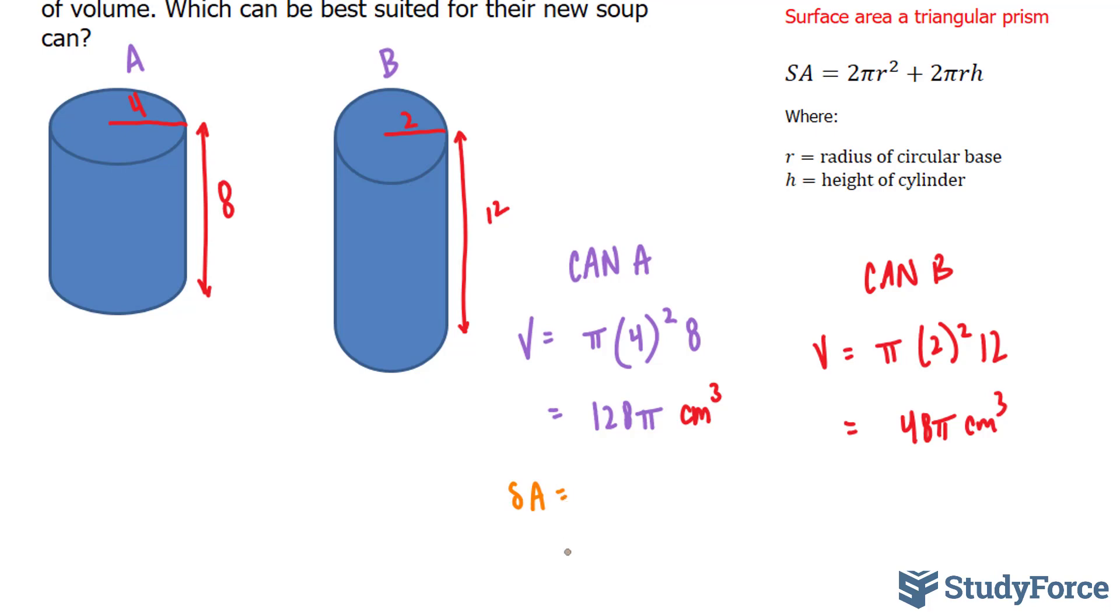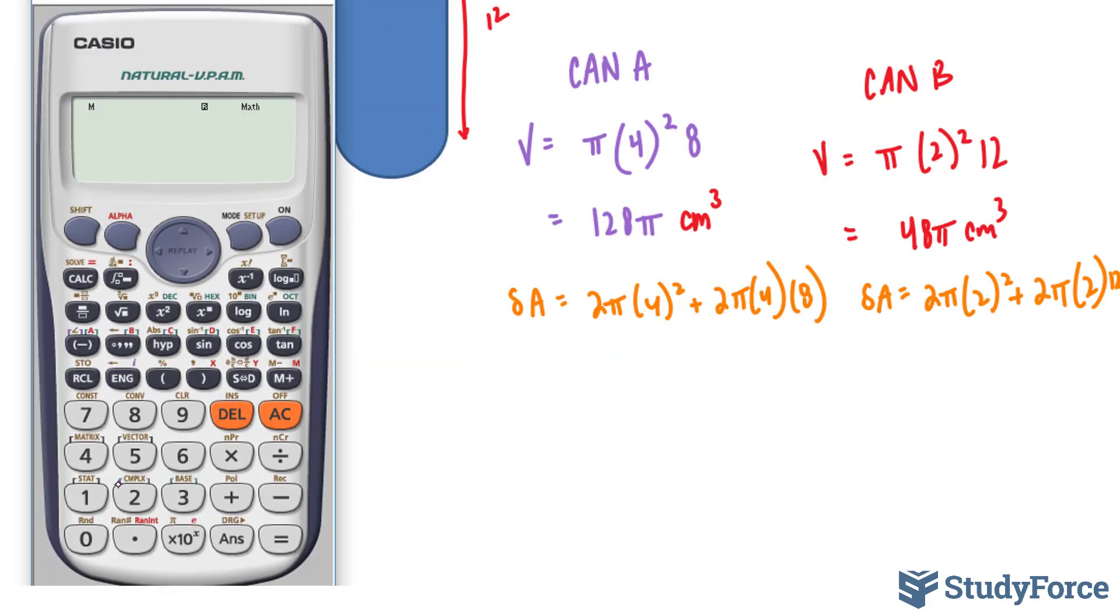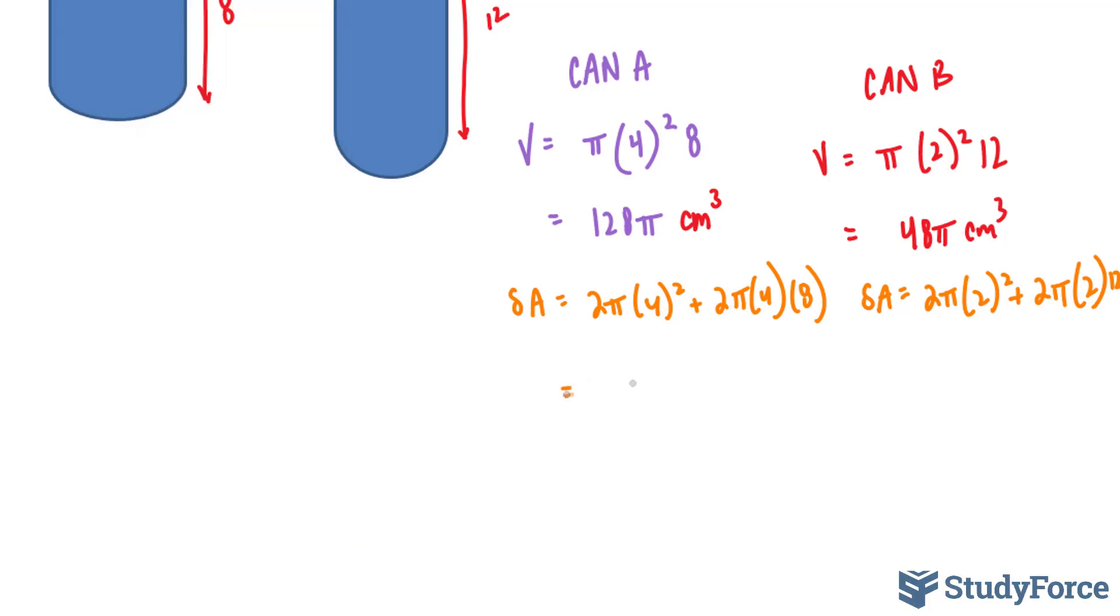The surface area of this one is equal to 2 times pi times 4 to the power of 2 plus 2 pi times 4 times 8. And similarly, using our calculator, 2 times pi, bracket 4 to the power of 2 plus 2 times pi times 4 times 8 gives us 96 pi or 301.59 centimeters squared. Remember, surface area is an area, so we're going to use squared here for our unit.